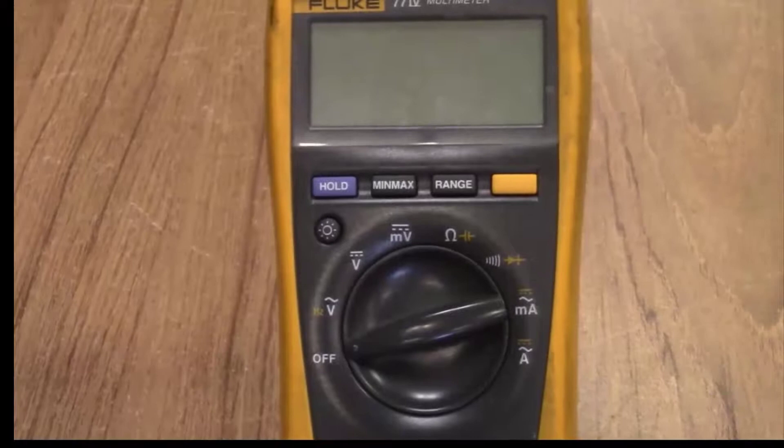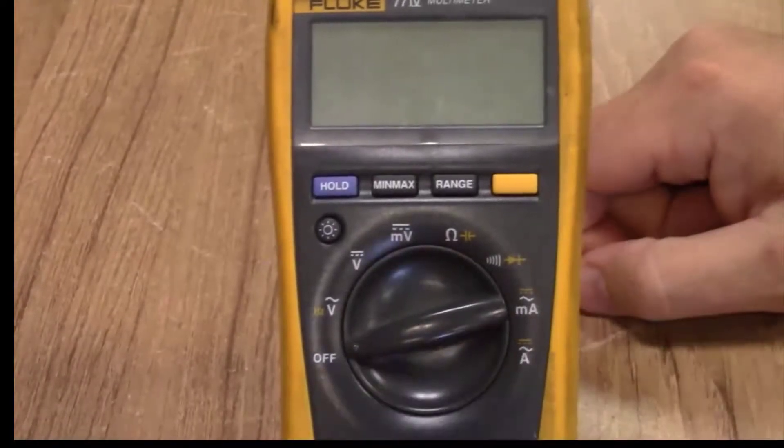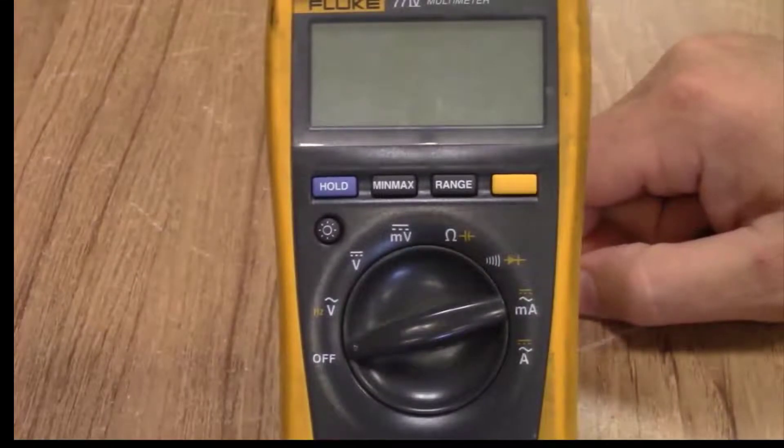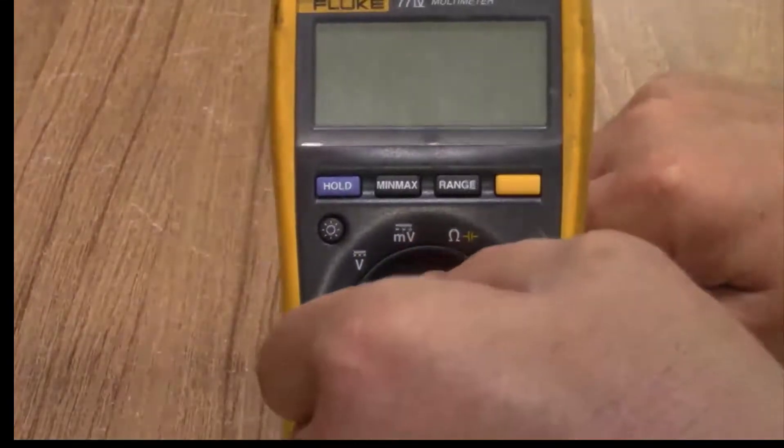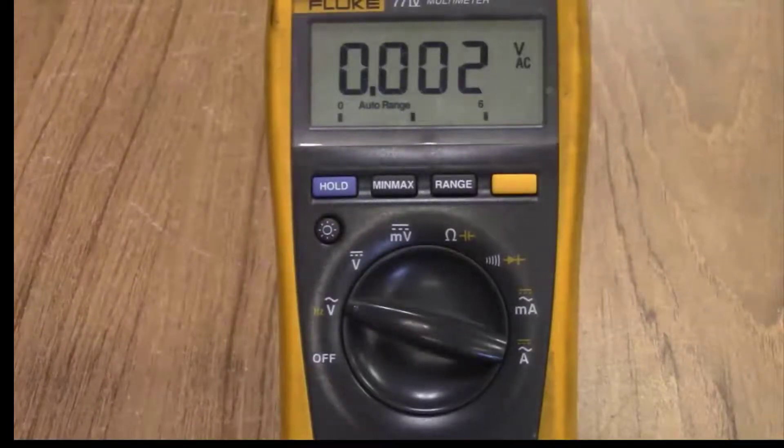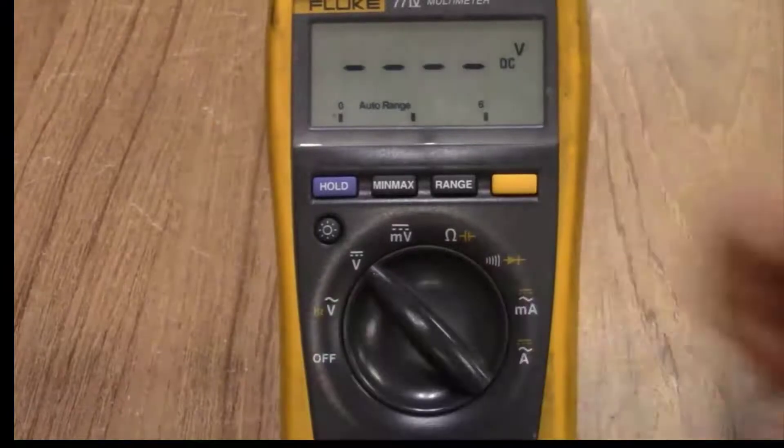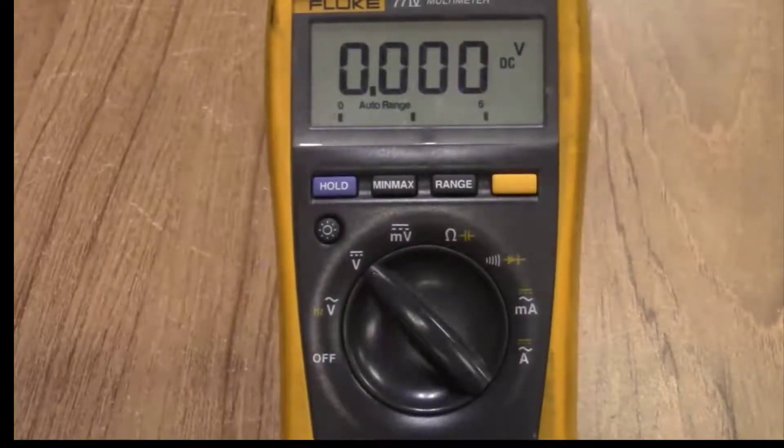So on the top portion of the meter start off with your dial. You have an off selection for the position of the dial. Voltage to measure AC voltage. A voltage setting for DC voltage.